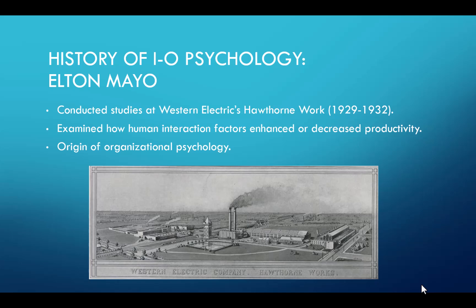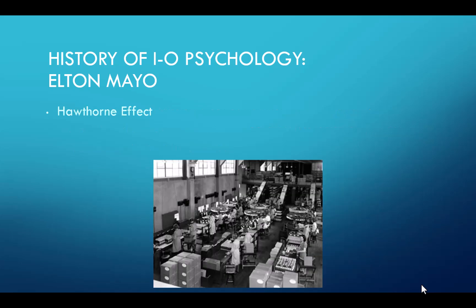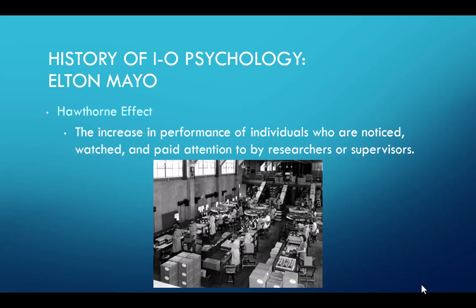One of the things he found was that any changes made to variables resulted in increased productivity. Years later, researchers analyzed the results and noticed that employees performed better when researchers or supervisors were observing and interacting with them. This became known as the Hawthorne effect — an increase in performance of individuals who were noticed, watched, and paid attention to by researchers or supervisors. It suggests that people's performance changes because they're being observed; when someone's watching, you want to do a little bit better and impress them.